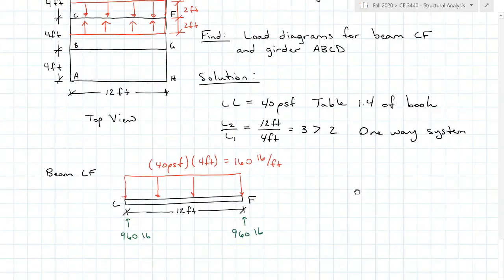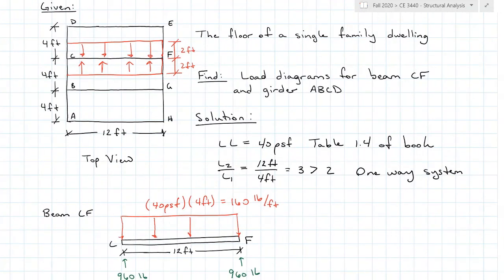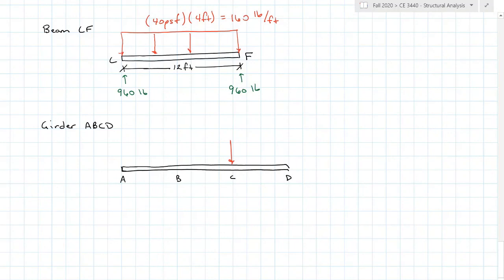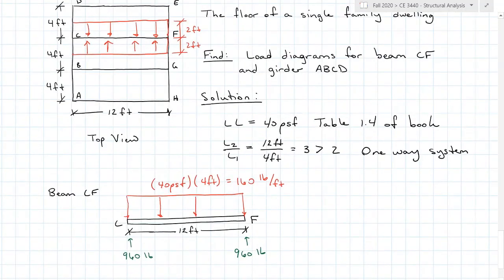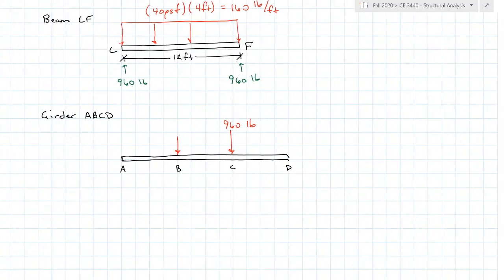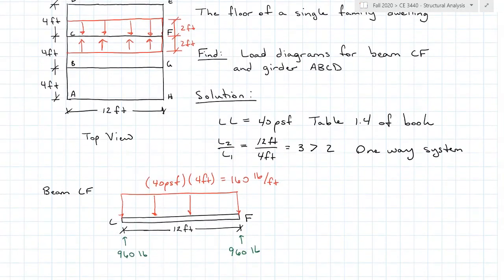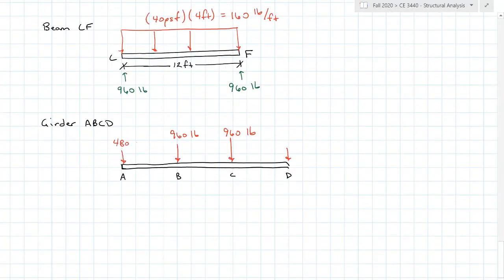We need those beam reactions because the other part of the question asks for girder ABCD, which has beams CF, BG, AH, and DE attaching to it. If the girder is pushing up on beam CF, beam CF is pushing down on the girder, so that's 960 pounds at C. Beam BG has the same two-sided load pattern, also giving 960 pounds. Beams at A and D only have load from one side, so they carry half: 480 pounds on either of those sides. That gives us the complete loading for beam CF and girder ABCD.